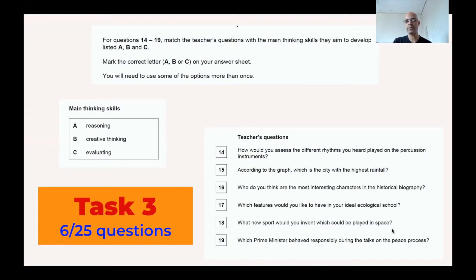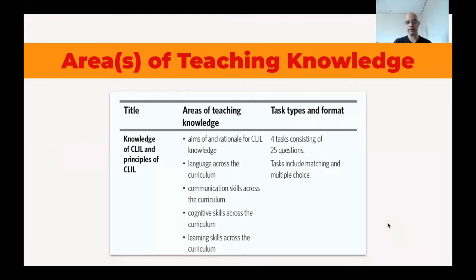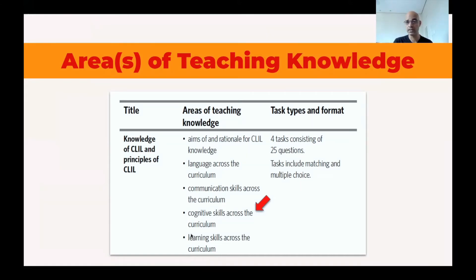Let's delve a little bit deeper into this question. This is the first section of the TKT CLIL test, which tests our knowledge of CLIL itself and of the principles of CLIL. We need to determine which one of the areas of teaching knowledge this question refers to. If we're talking about thinking skills, we're definitely talking about cognitive skills — not aims of CLIL, not language or communication skills or learning skills across the curriculum. We are being tested on the cognitive skills that CLIL entails. The four tasks are comprised of 25 questions, and this particular task includes six of them.